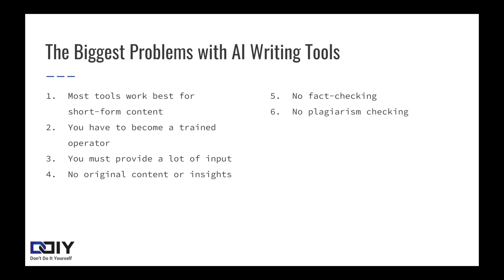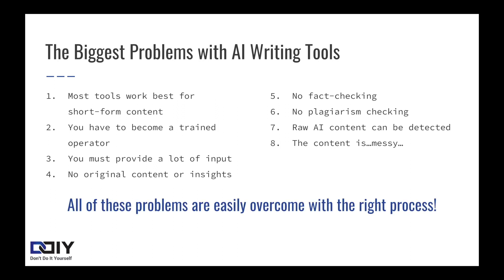Number six is that there's no plagiarism checking, or at least not all the tools have plagiarism checking. So it's easy to accidentally steal sentences, statistics, and paragraphs of text without any attribution to the original source. Number seven, raw AI content can be detected both by Google and your average reader. Google has announced that they devalue AI content, but if you edit your content and use it as a productivity tool, it's perfectly acceptable. We'll teach you how to make AI content undetectable. And then finally, the content output is messy — it's often organized in weird, difficult to understand ways without a coherent overall structure. Again, that's what an editor is for.